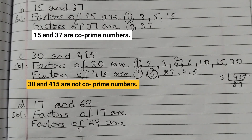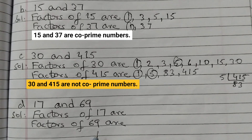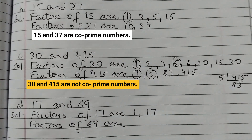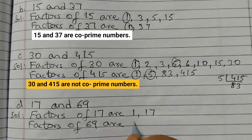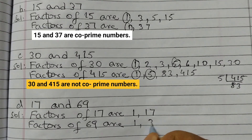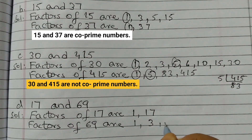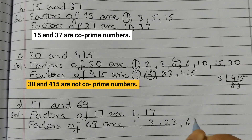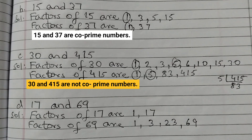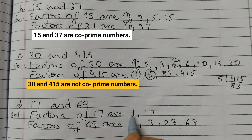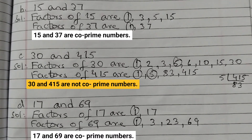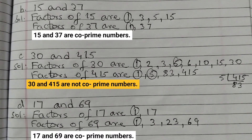Next one, 17 and 69. Factors of 17 — 17 we all know is a prime number — so 1 and 17, only 2 factors. Factors of 69: 1, then 3 — 3 goes in the table — then 23 is a prime number, and then 69. So we have 4 factors. Now common factors — the common factor is only 1. That means yes, 17 and 69 are co-prime numbers.